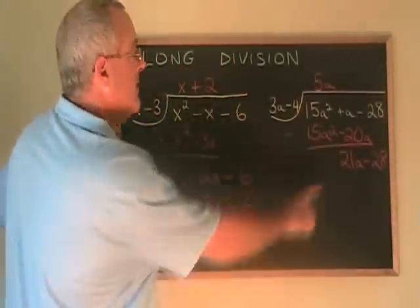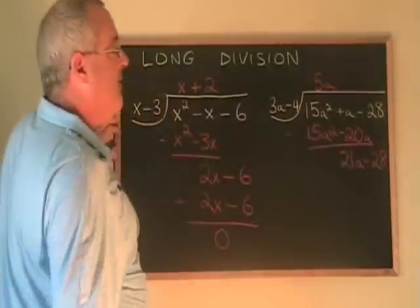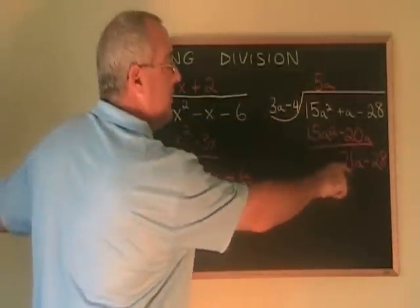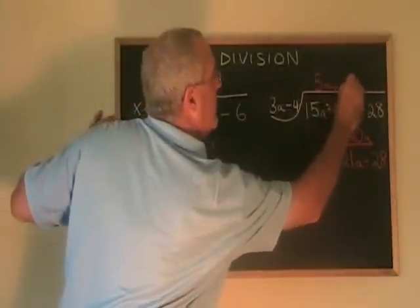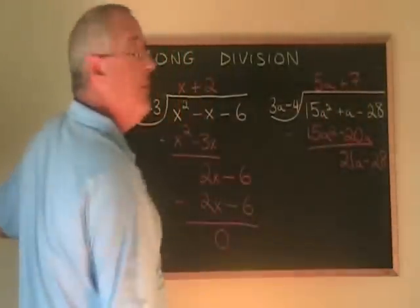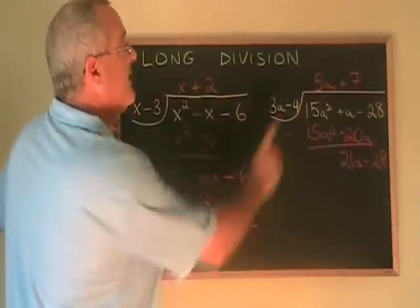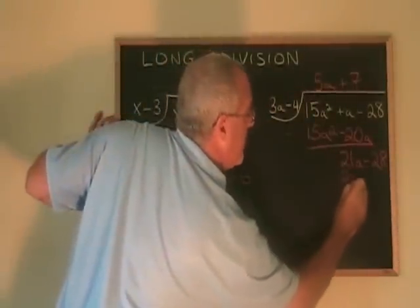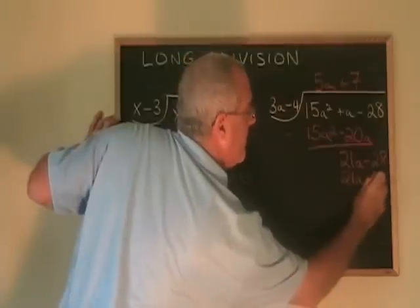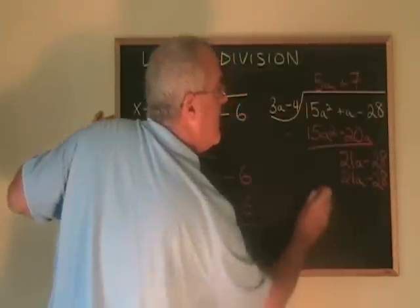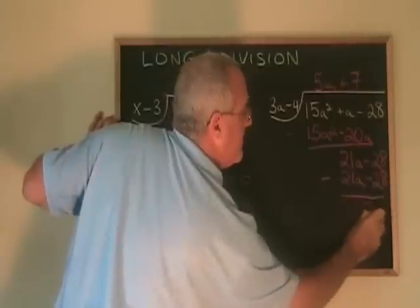We do the process again using the 21a. What do you have to multiply 3a by in order to get 21a? Positive 7. So we write plus 7. And then we multiply the positive 7 by the whole binomial. 7 times 3a is 21a. 7 times negative 4 is negative 28. If we subtract, we get zero. We're done.